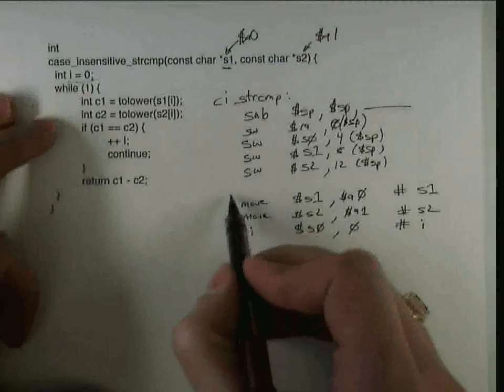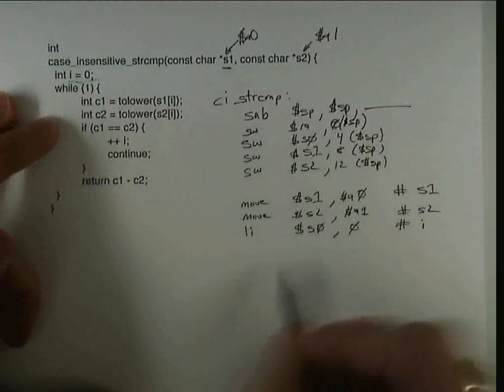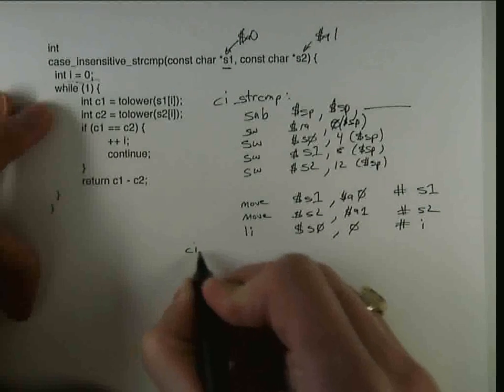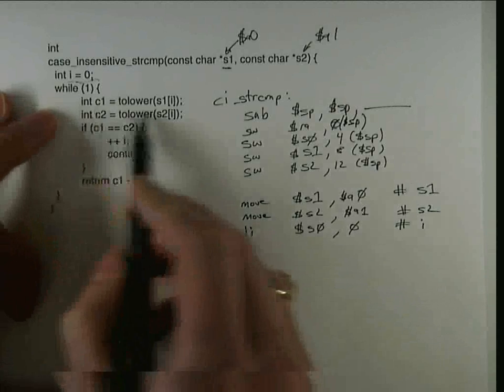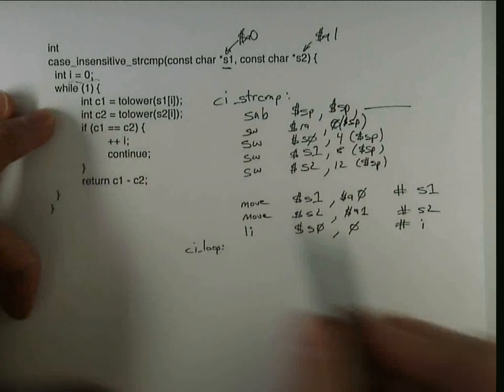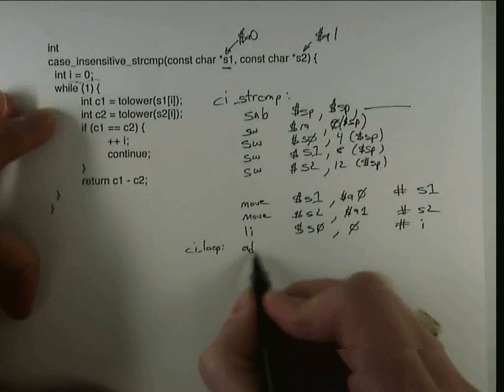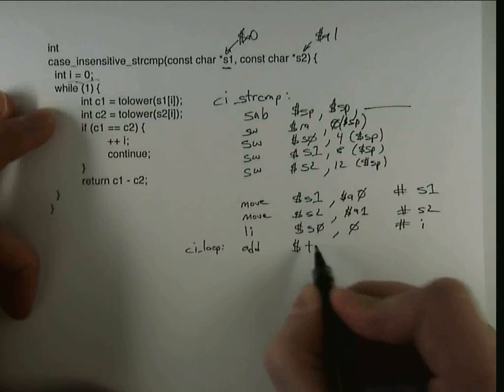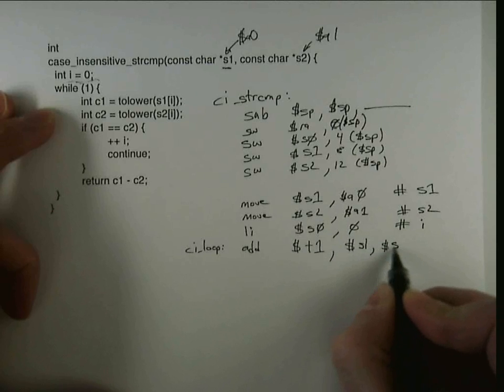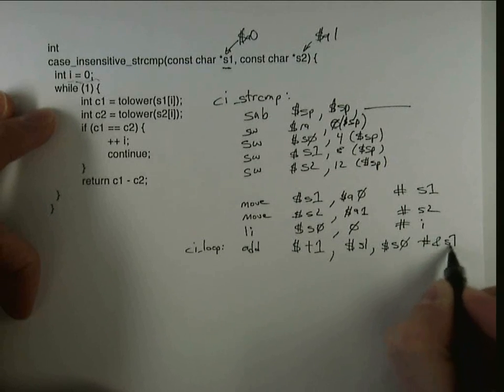And notice I left myself a little space here in case I need to get myself some more callee saved registers later in the code. So now I'm ready to do ci loop. The first thing I have to do is add s1 to i, and what we notice is both of those values are in registers. And so I can add them together into t1, I'm adding s1 and s0, and that gives me the address of s1i.